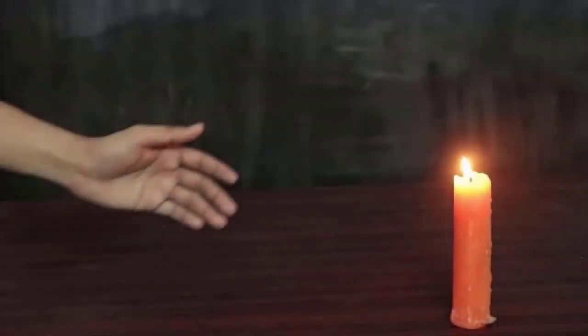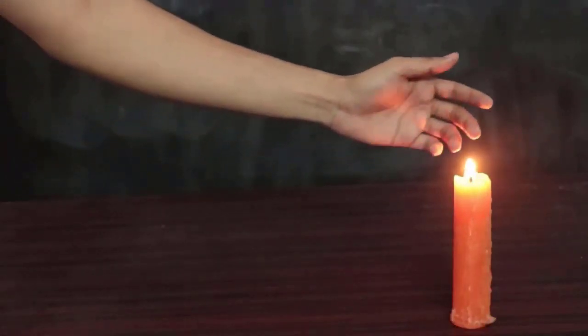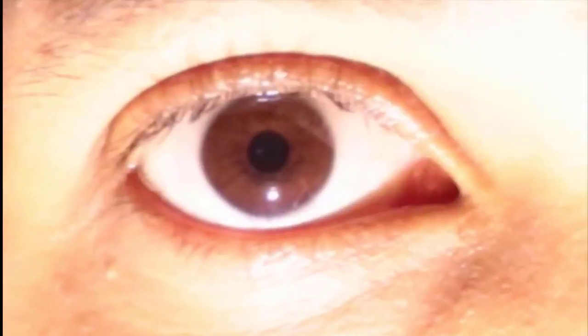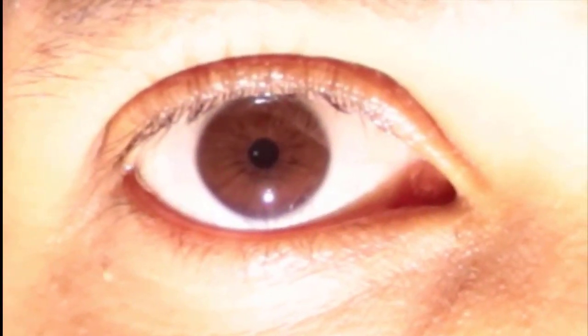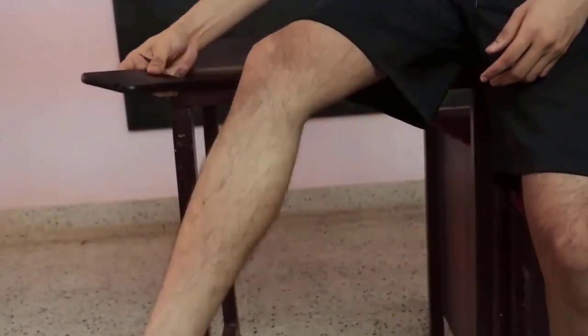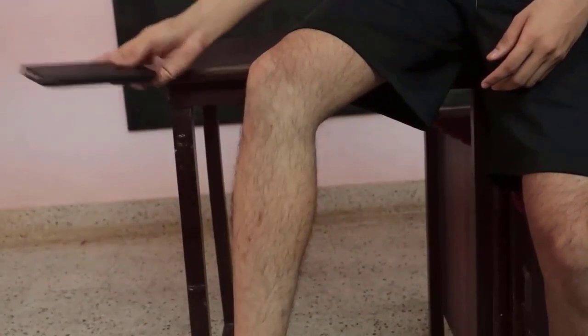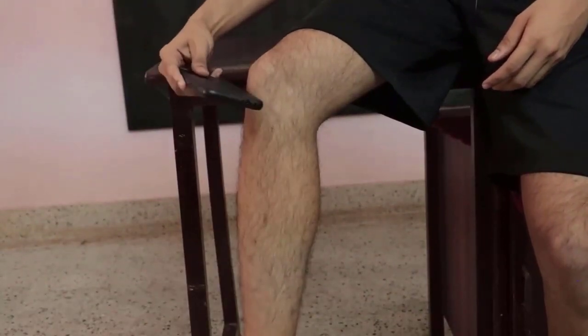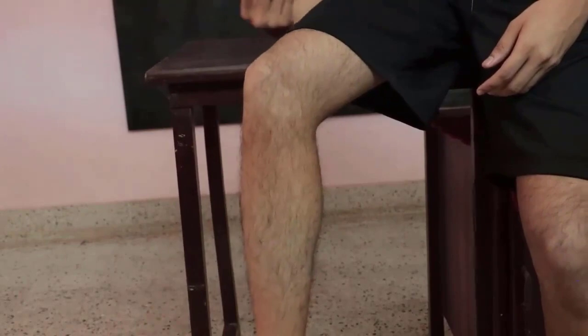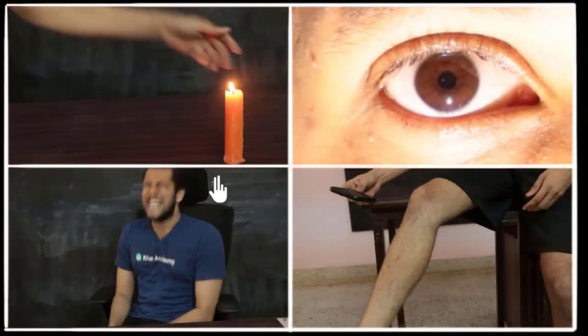Check out these four videos. In the second one, look at that black pupil at the center — see what happens to it as I shine light. And over here, my leg is coming up automatically; I'm not doing this on purpose. The moment I hit it, the leg comes up automatically. So the question is: what did you find common in all four videos?